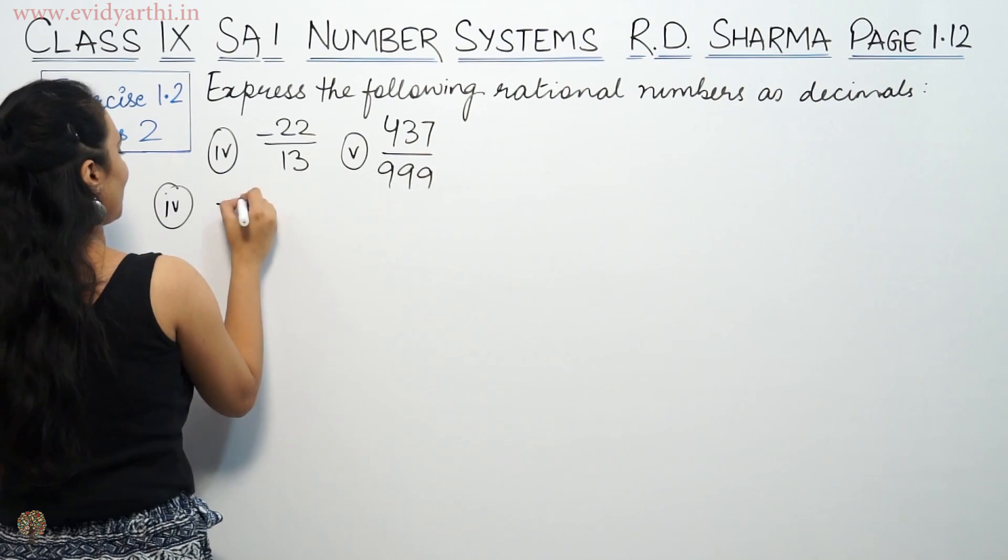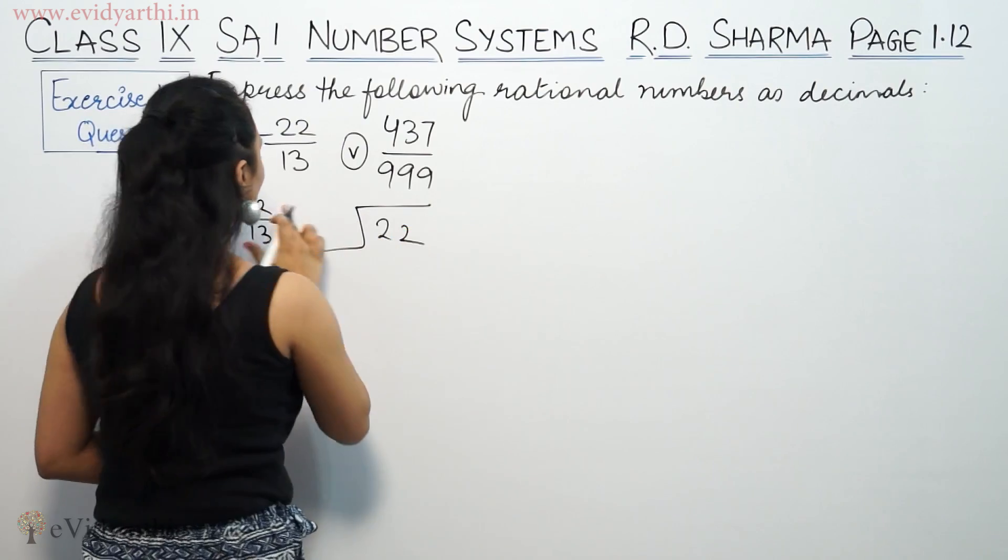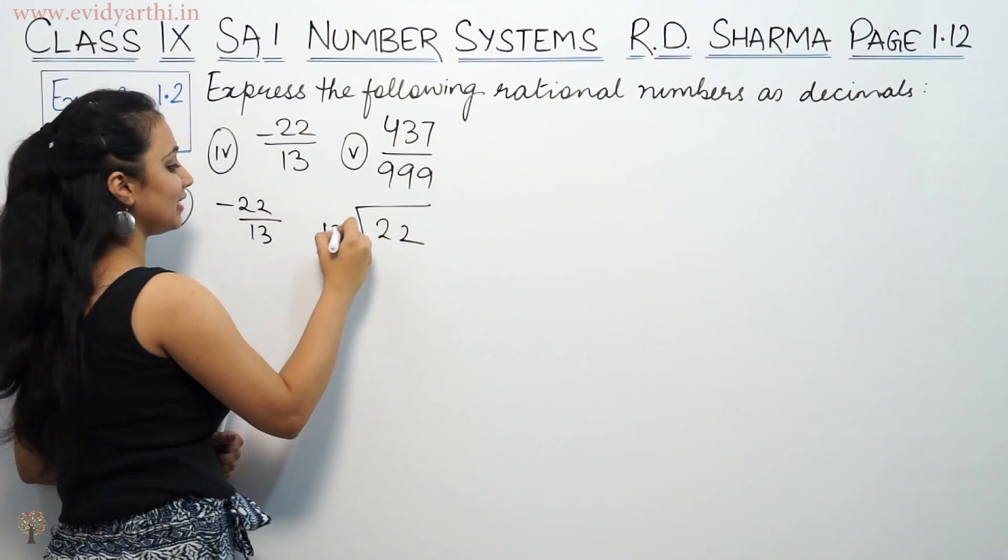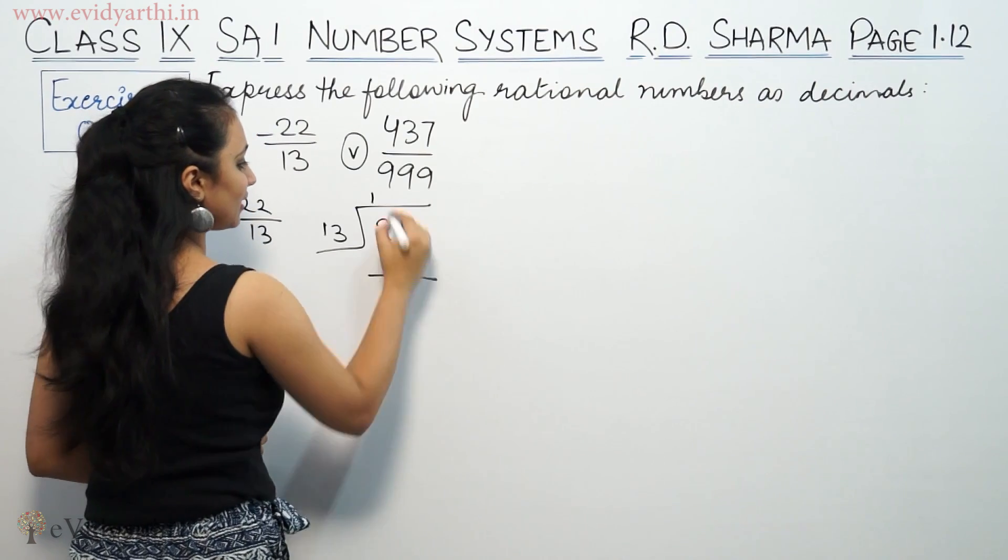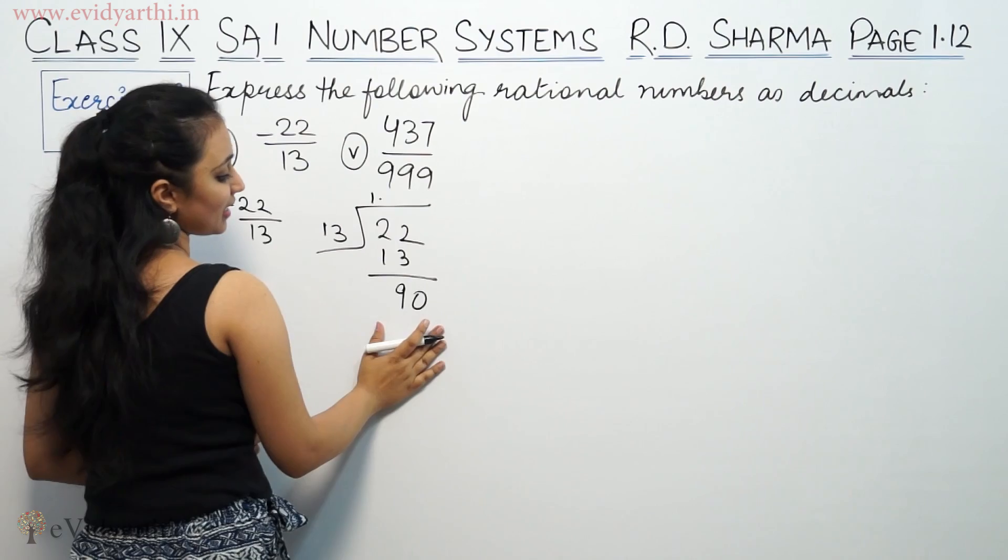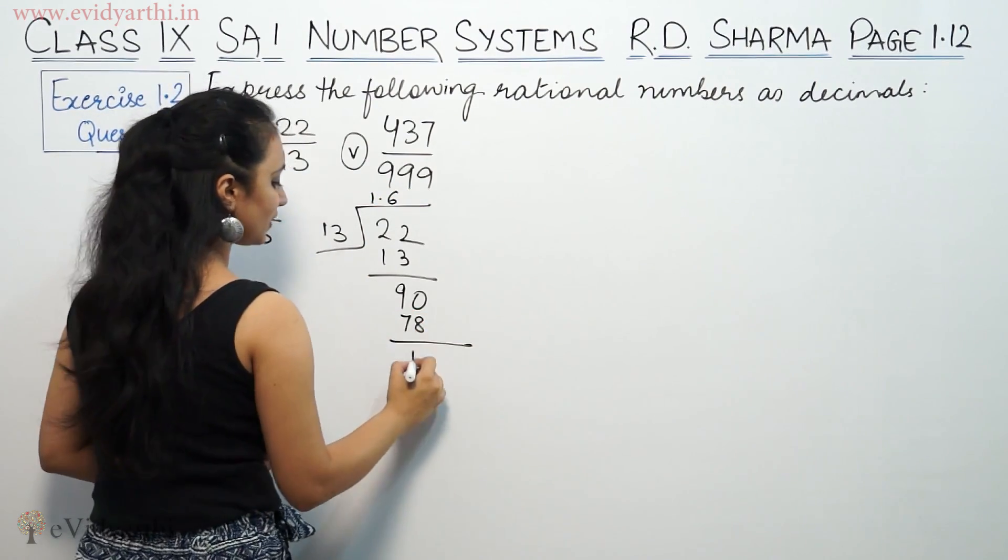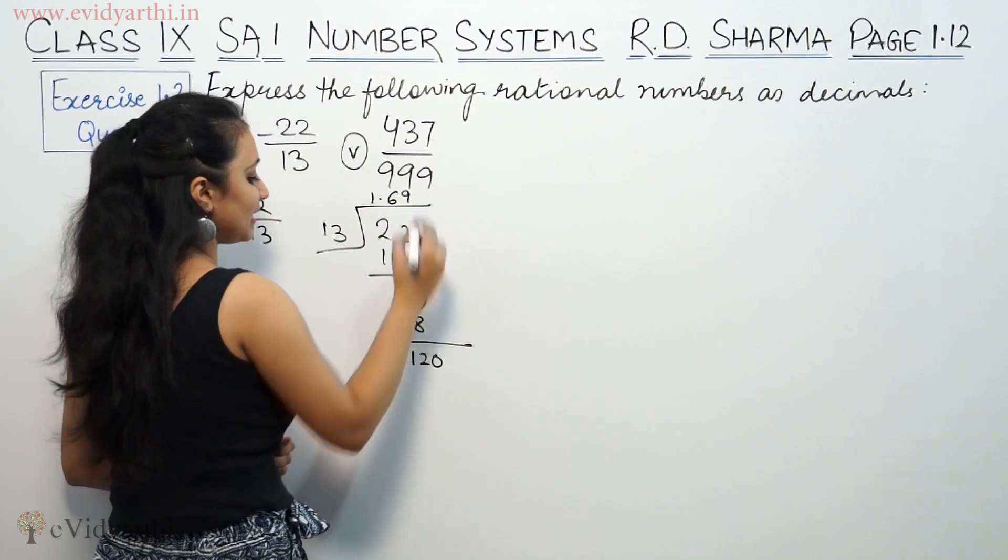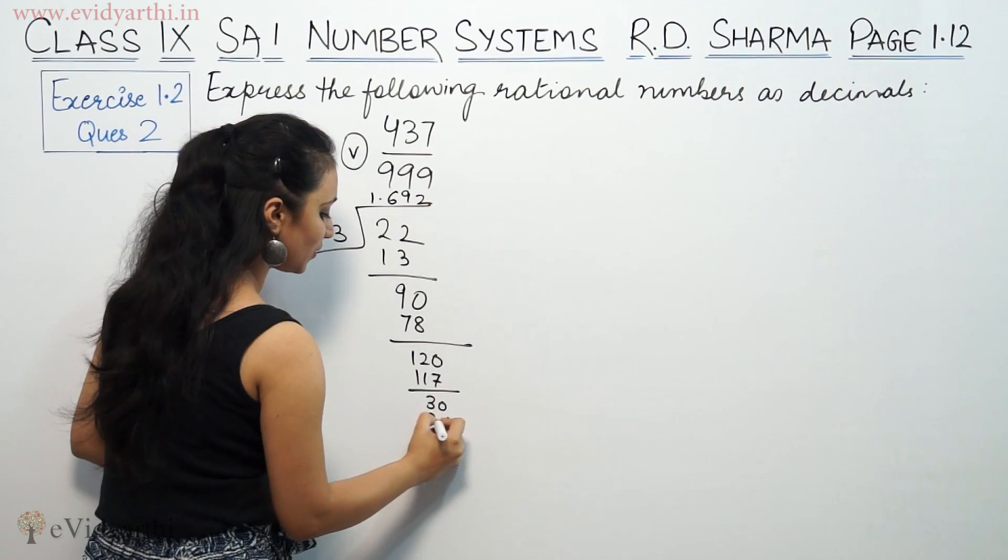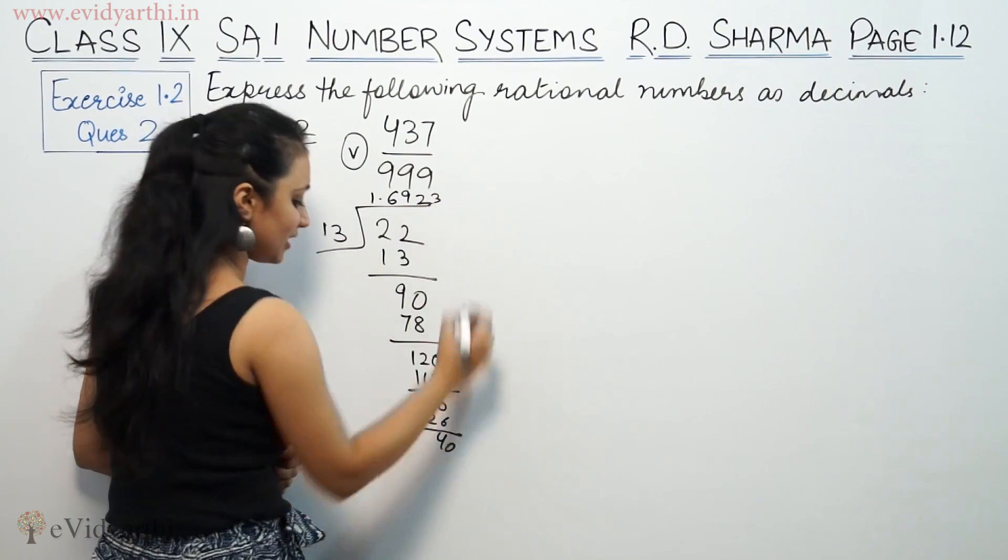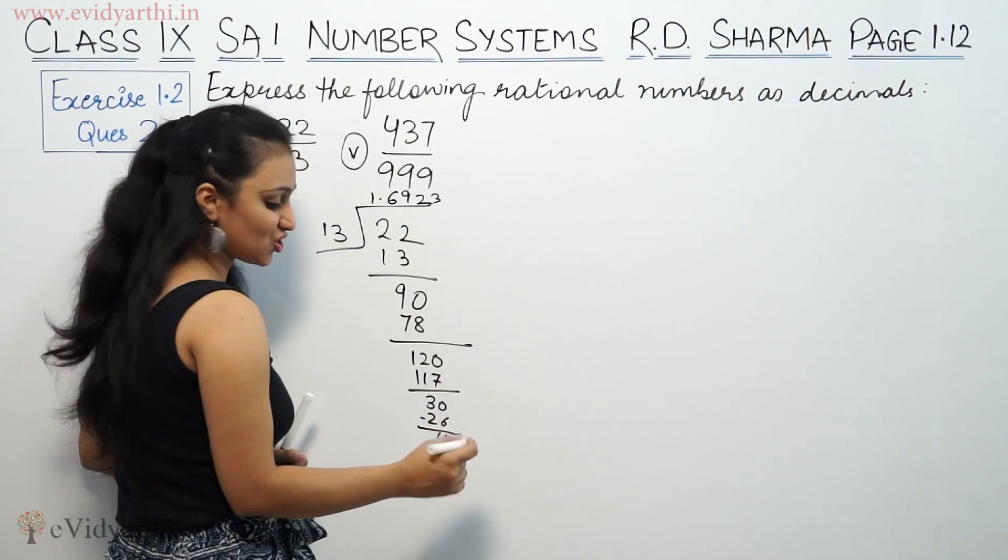First, the 4th part: minus 22 by 13. So, 22 is the dividend here and 13 is the divisor. 13 goes into 22 one time. Remainder is 9, so I put 19. 13 times 1 is 13, remainder 9. Bring down zero to get 90. 13 times 6 is 78.